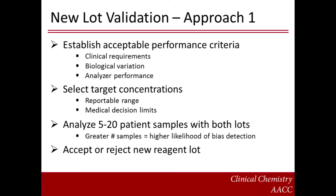A typical procedure for validating a new reagent lot in a laboratory involves comparing results for a group of patient samples using both the old and new reagent lots. The first step in this procedure is to establish acceptable performance criteria for the new reagent lot. Most laboratories will define a maximum percent difference compared to the old lot that is based on clinical considerations. For a test with a single, well-defined clinical application, this is relatively straightforward. BNP is a good example of such a test. However, for a test used for a variety of different purposes, such as HCG, the selection of an appropriate performance goal is more complex, and additional considerations including biological variation, professional recommendations, and the analyzer's analytical capabilities may be taken into account.